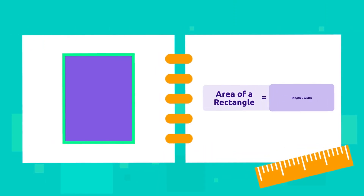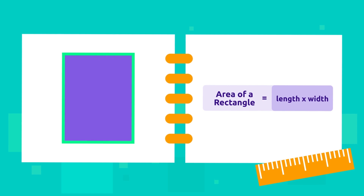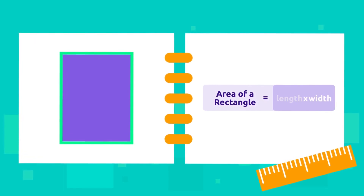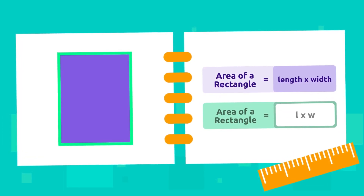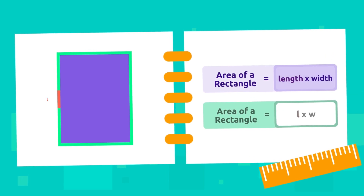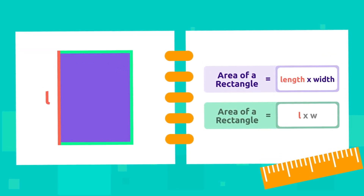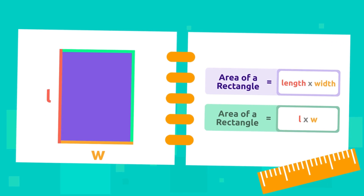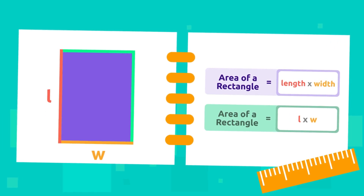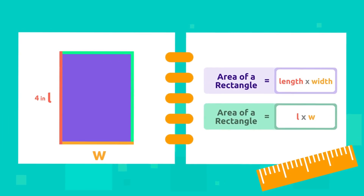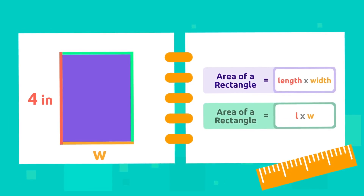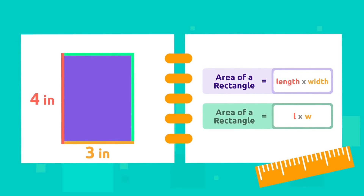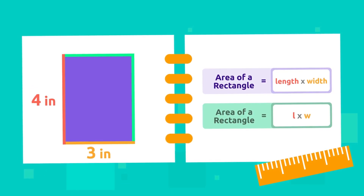To calculate the area of a rectangle, we need to know the formula: area is equal to length times width. The length is represented by the letter L and the width is represented by the letter W. Let's practice. This rectangle's length is four inches and the width is three inches.